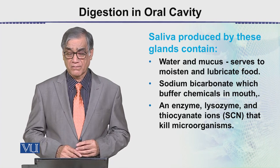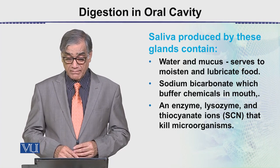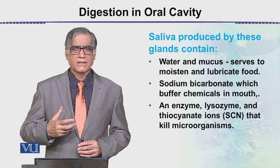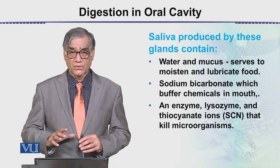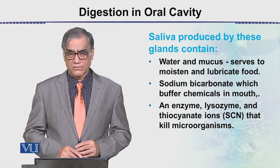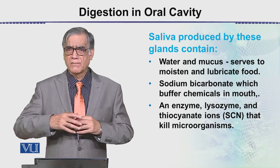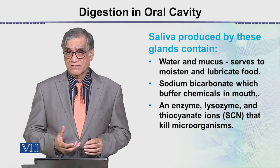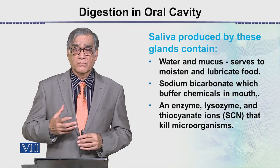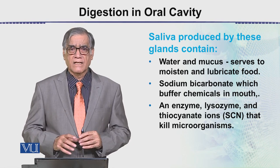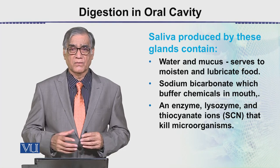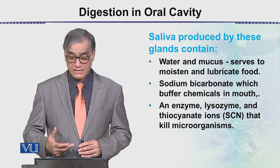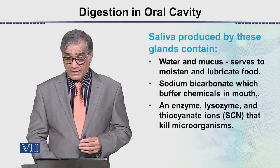The pH is kept almost at the neutral point. The enzyme lysozyme and thiocyanate ions kill microorganisms. There is also a small amount of HCl, and although it is very little it is sufficient to kill microorganisms. No matter how clean our food is, some bacteria or spores may still be present, but they are eliminated by these chemicals. Bacteria are commonly killed by thiocyanate ions and the enzyme lysozyme.